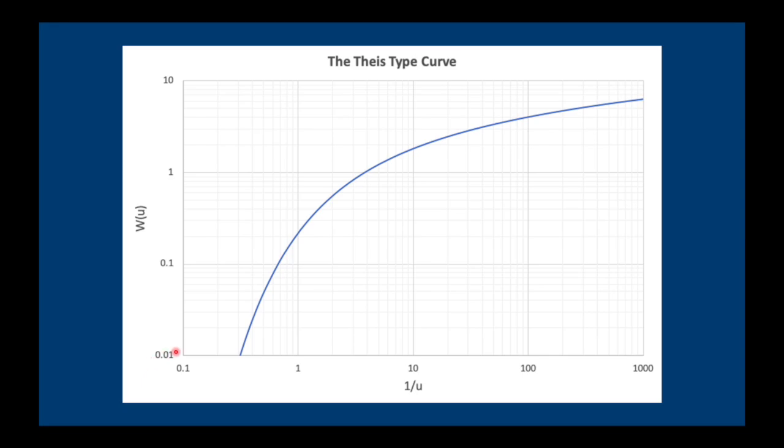So W, the well function, is always plotted on the y-axis and as I mentioned before W is related to drawdown. And 1 over u or sometimes u is plotted on the x-axis and u is always related to time.